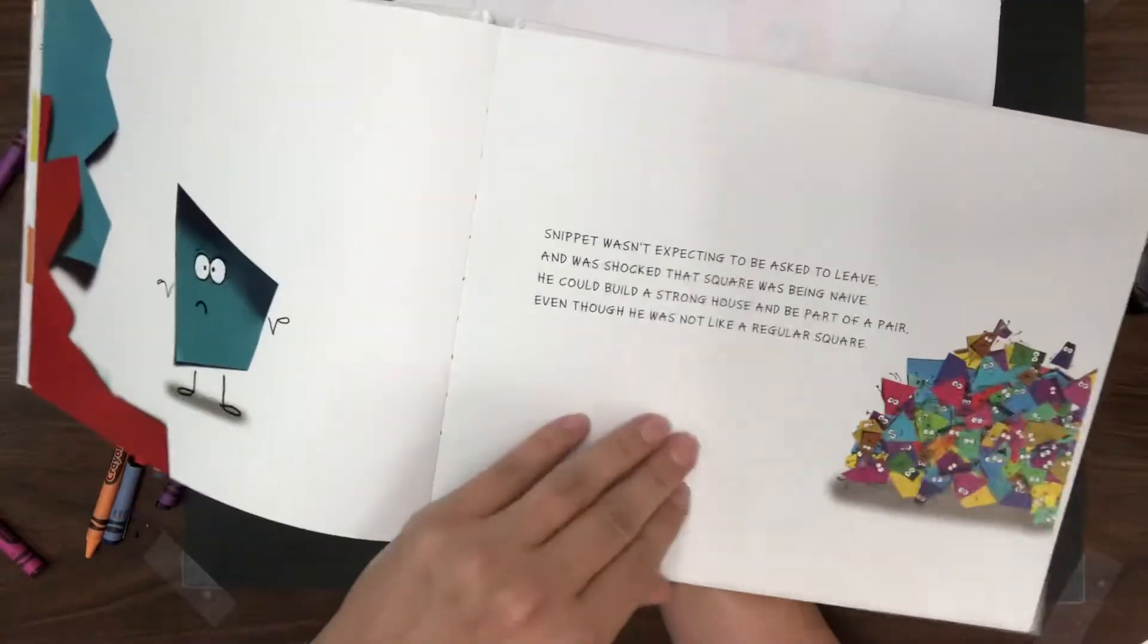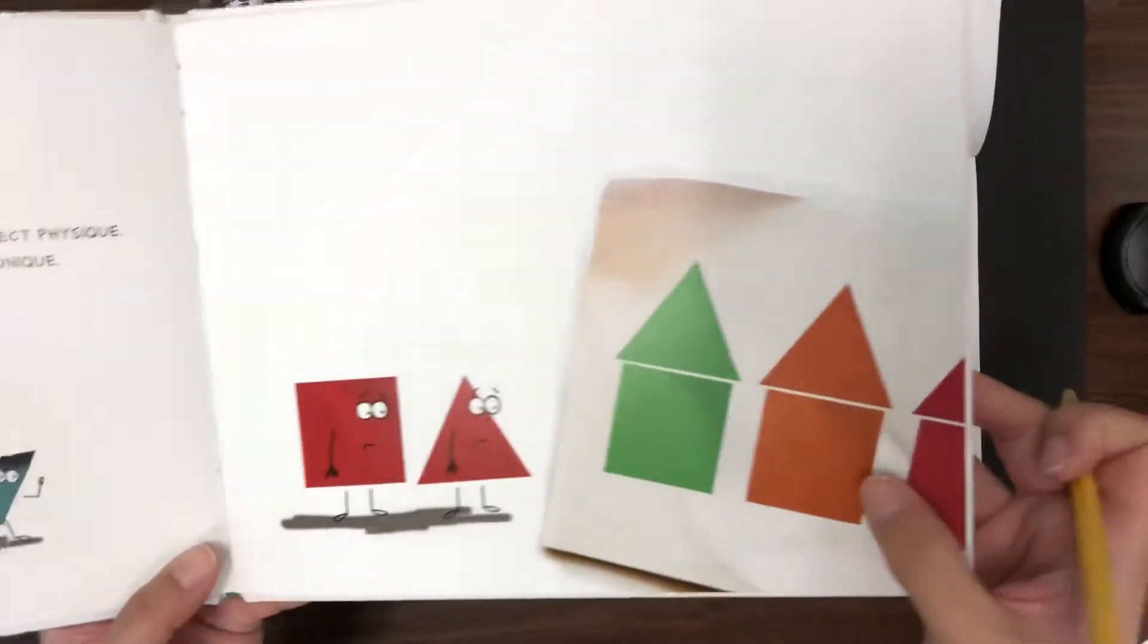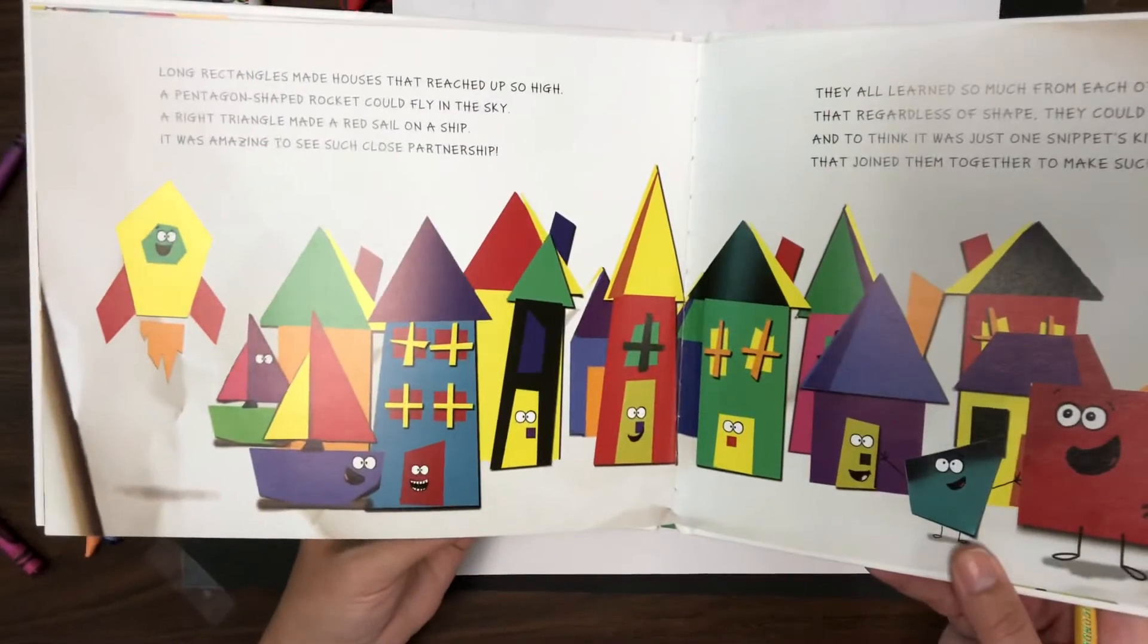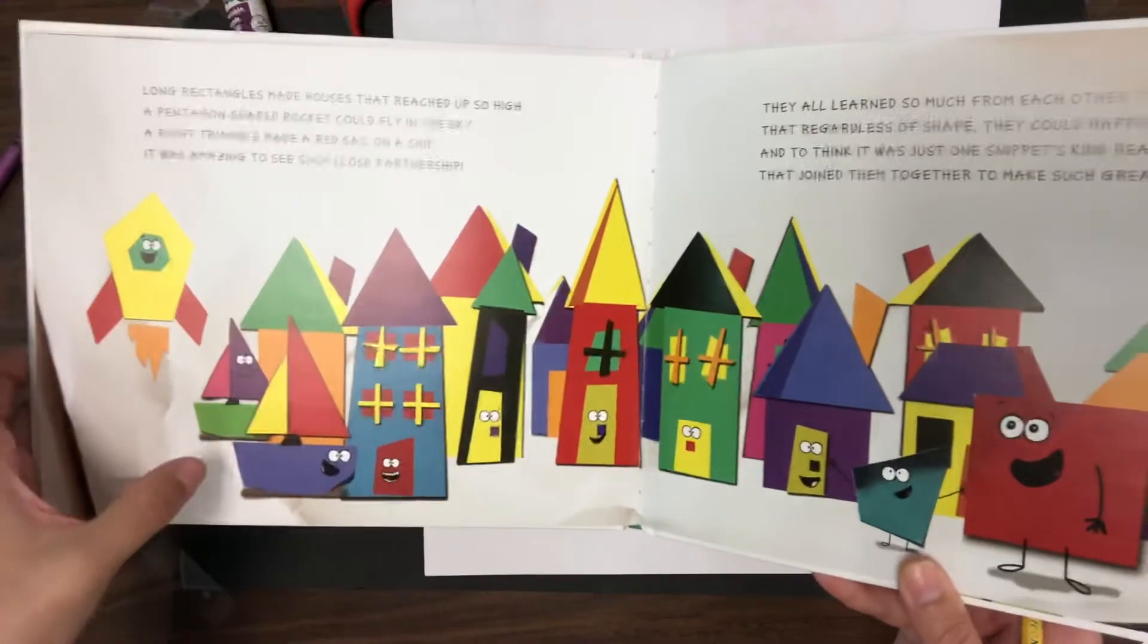They would put together their square and triangle top, and they made a lot of houses. Towards the end they realized they could work together and made a whole community of houses, a rocket ship, and some sailboats.